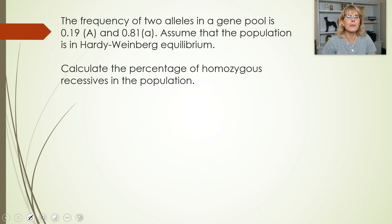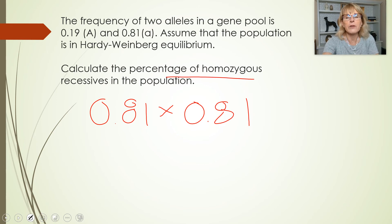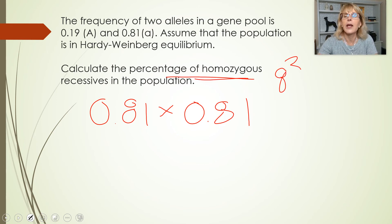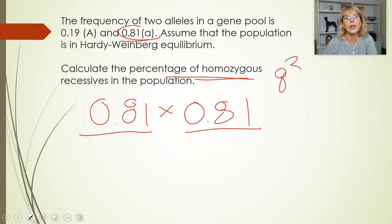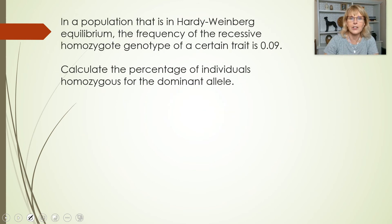The percentage of homozygous recessives in the population is q², and q² is 0.81 times 0.81 because q is 0.81. That equals approximately 0.6561.